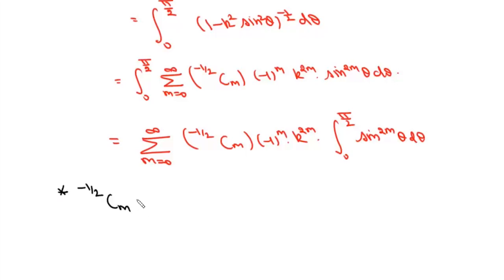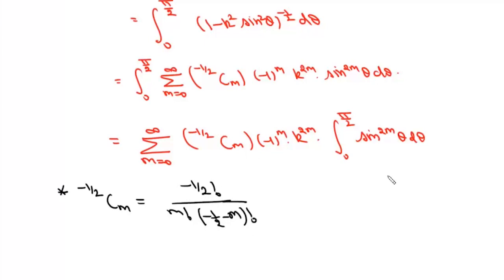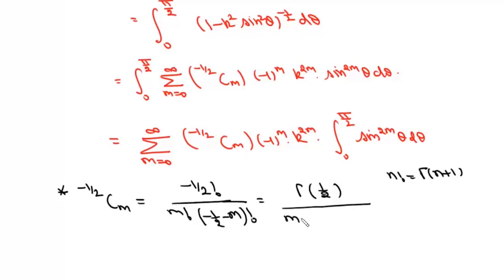We simplify (-1/2 choose m) using the gamma function. Since nCm equals factorial(n) over factorial(m) times factorial(n minus m), and factorial(n) equals Gamma(n+1), we can write (-1/2 choose m) as Gamma(1/2) over factorial(m) times Gamma(1/2 minus m).